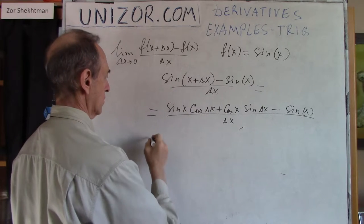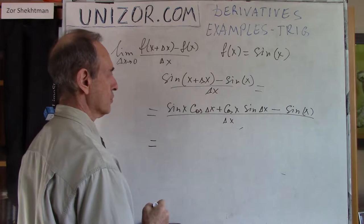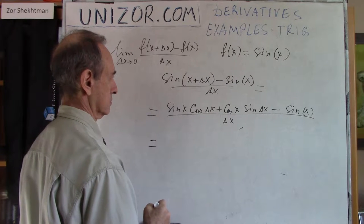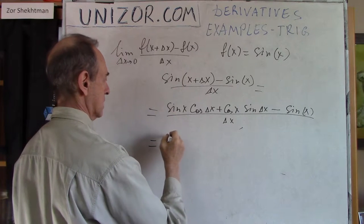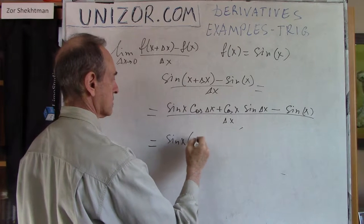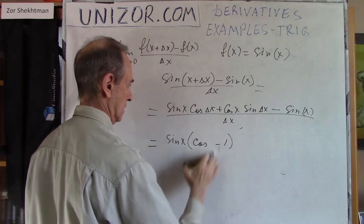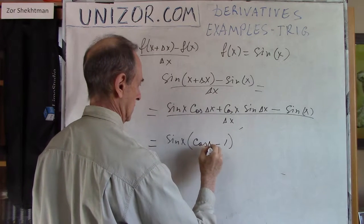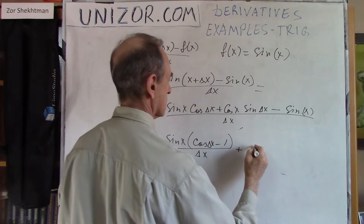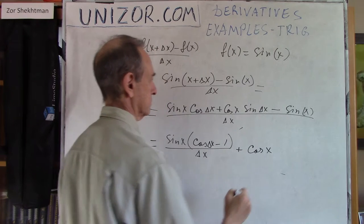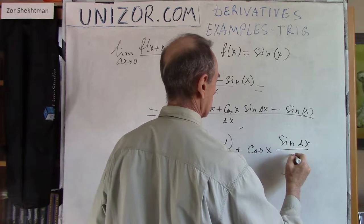So what do we have here? We have sine x times cosine delta x minus one divided by delta x, plus cosine x times sine delta x divided by delta x.